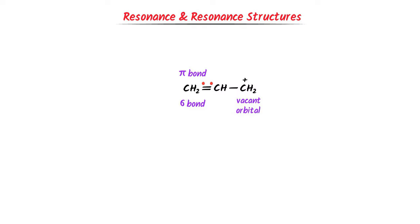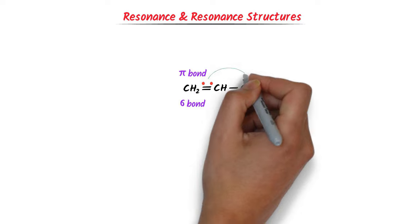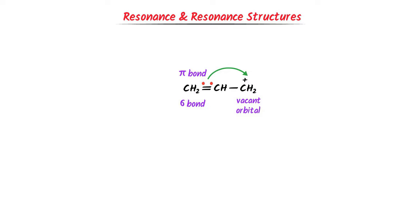There is a possibility that these pi electrons will shift from the first carbon to this vacant orbital. Now the pi electrons are shifted from the first carbon to the third carbon. The first carbon has donated pi electrons, so a positive charge appears on it. On the other hand, the third carbon has gained pi electrons and its empty orbital has been filled.